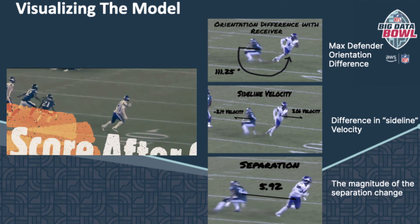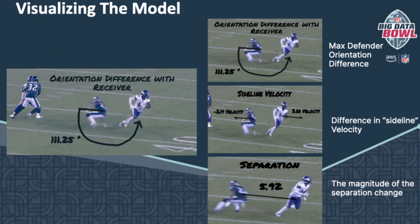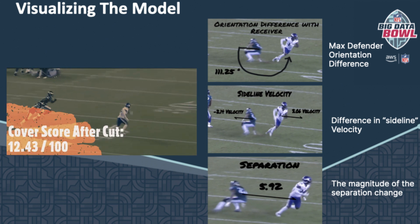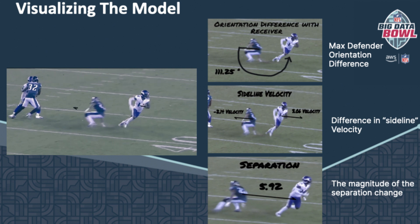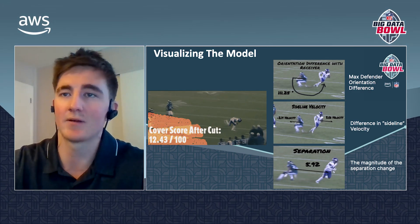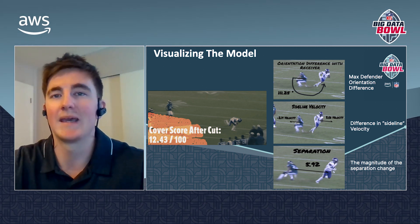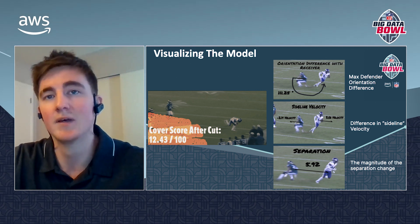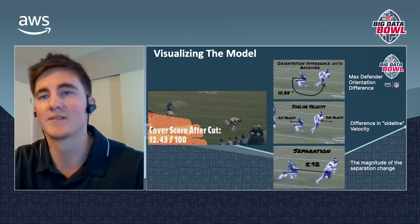Next we have sideline velocity, which measures how fast Diggs and Darby are moving towards the sideline. As you can see, there's a pretty large gap between the two — Diggs is pushing hard towards the sideline while Darby is still headed in the opposite direction. Next we have separation: before the cut, Darby was less than one yard away from Diggs, but after the cut Diggs generated nearly six yards of separation. These are only a few of the many features in the model, leaving Darby with a grade of 12 out of 100 on the play. For the analytics folks, this is basically an inverse completion probability model turned into a scoring function, training a separate model for each route and measuring only the wide receiver and defender interaction.